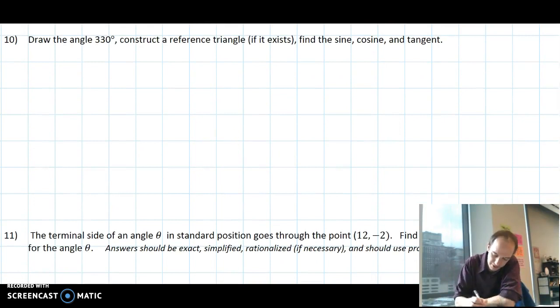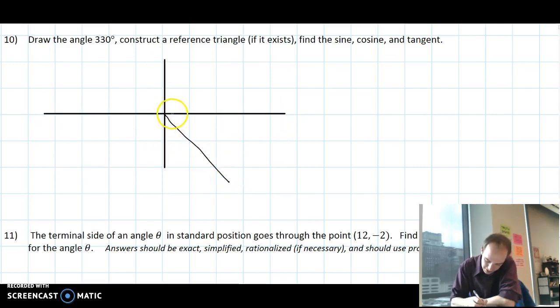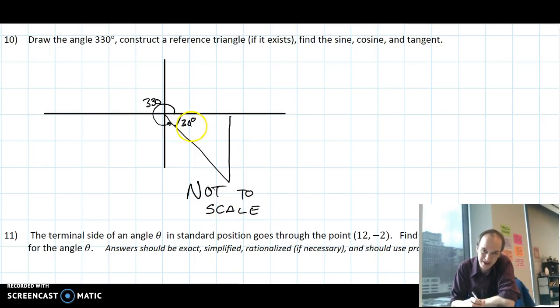Number 10 says draw the angle 330 degrees and construct a reference triangle if it exists, and find the sine, cosine, and tangent. So 330 is down in this quadrant. 330 is like this. And that means it's going to be 30 more to make 360. I've kind of drawn my triangle not to scale on purpose. But I see a 30, and I think about a 30-60-90 triangle. So in a 30-60-90 triangle, the short side is across from the small angle. That's going to be 1 is the shortest side. But since I'm in the quadrant where opposite sides are below the axis, that has to be negative 1. The adjacent side is the square root of 3. And since it's positive x over here, that's going to stay positive. And the hypotenuse here is 2.